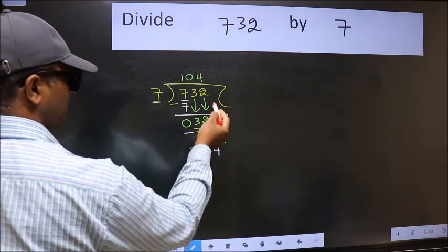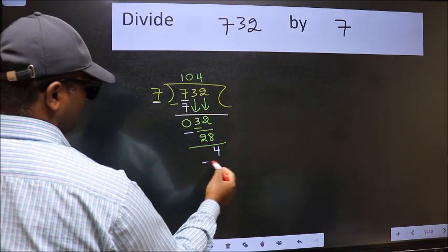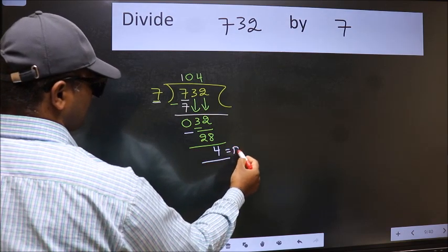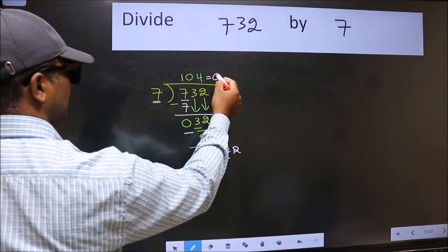No more numbers to bring down, so we stop here. This is our remainder and this is our quotient.